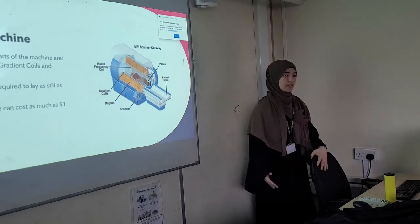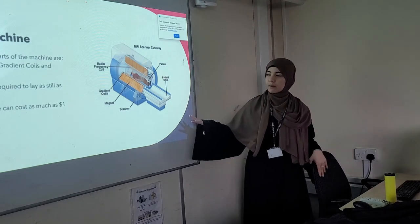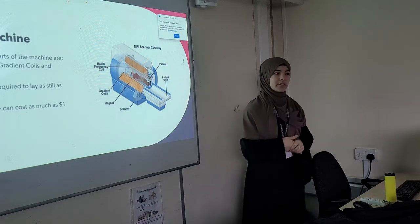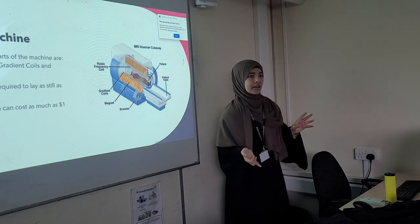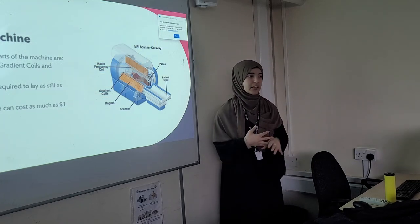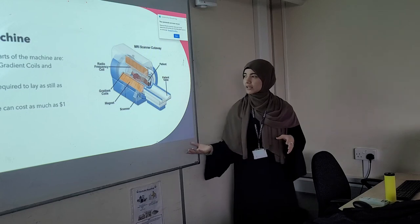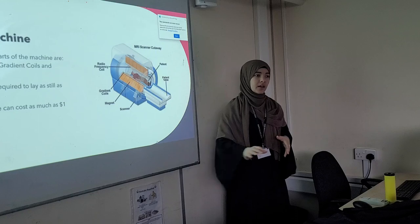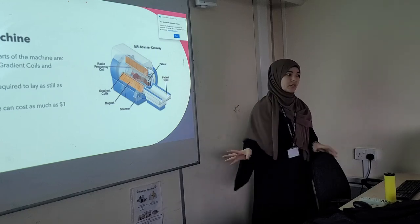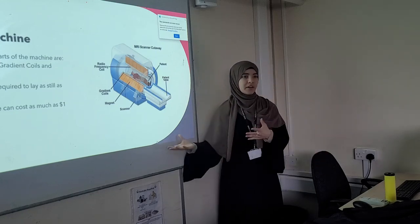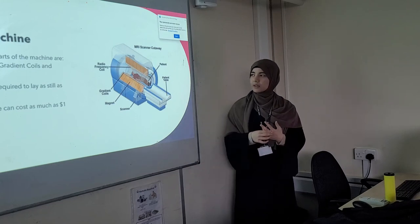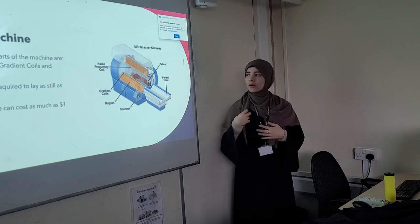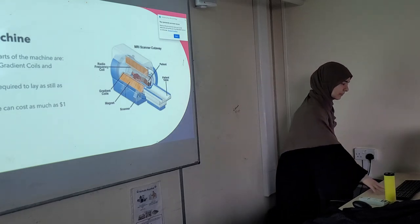A machine can cost as much as one million dollars. There are also certain people who can't take an MRI. You can't take one if you have metals in your body — that could be from a filling, a metal stent in your brain, or a metal stent in your arm if you've broken your arm. You also can't take it if you're claustrophobic, because it's a very tight enclosed space. If you're pregnant you can't take it either due to the magnetic radiation. Basically, if you can't take an X-ray, you can't really take an MRI.